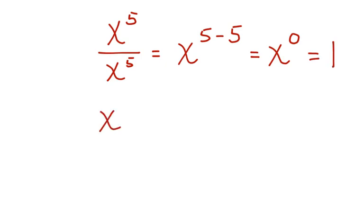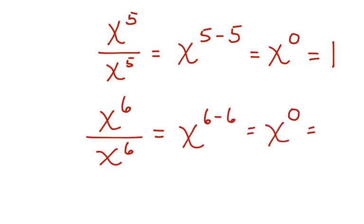If you have x to the 6th divided by x to the 6th, you're going to have the same thing. 6 minus 6, which is x to the 0 power, which equals 1.